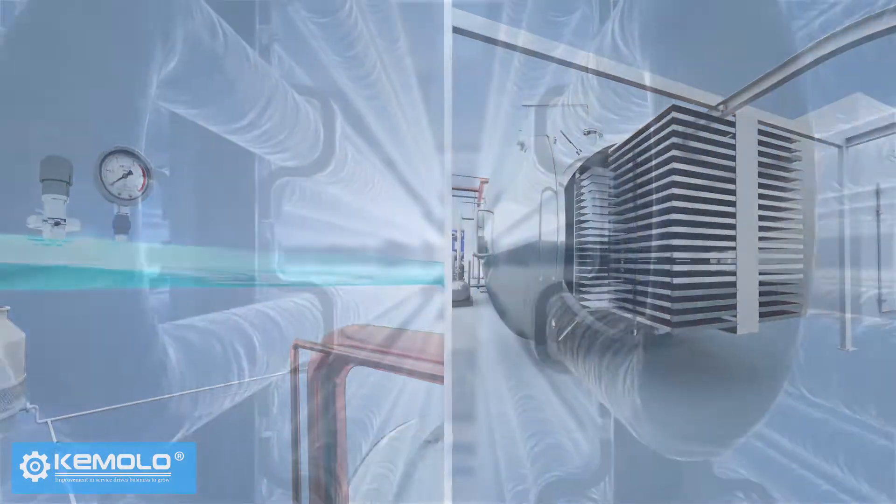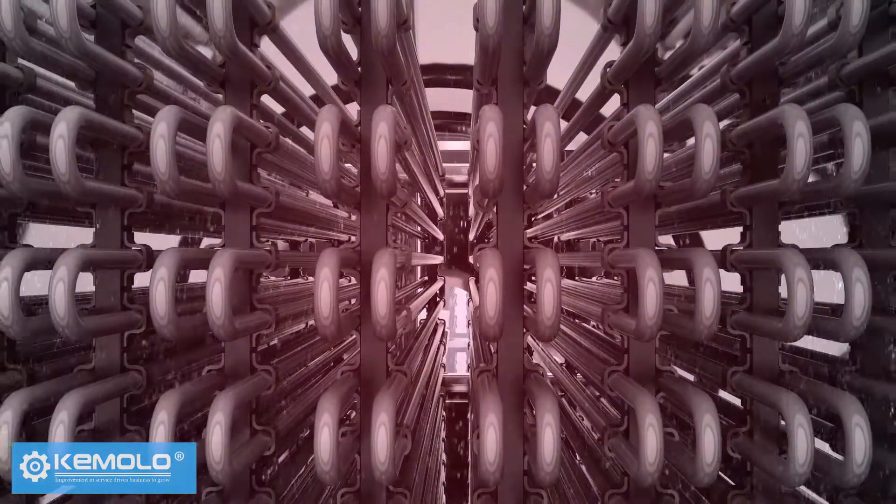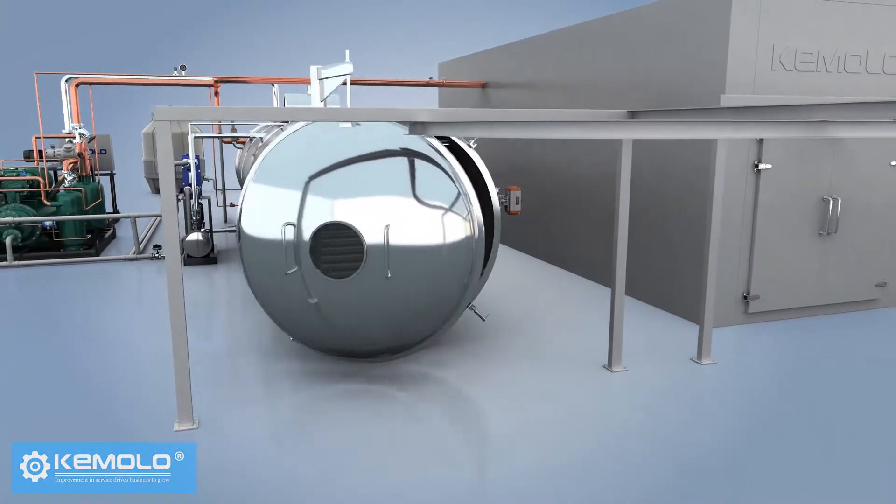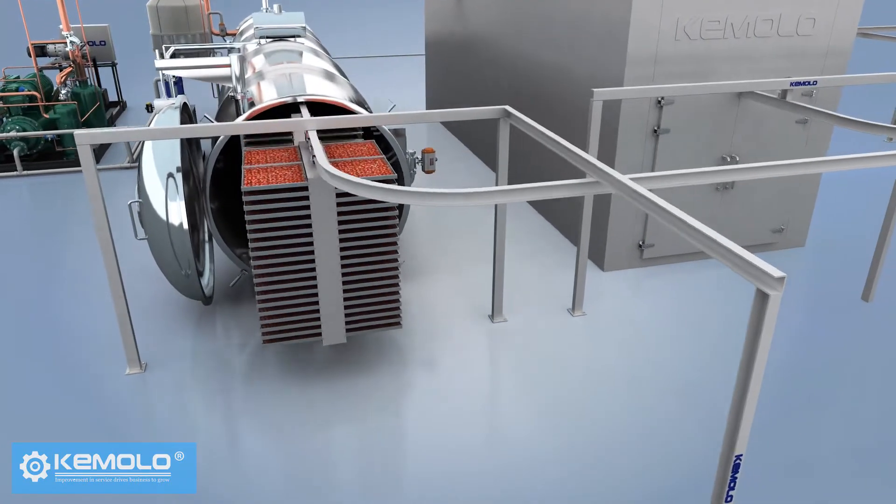After discharging, the frost on the water vapor collector needs to be defrosted for the next batch of production. Therefore, the freeze drying must be produced in batches and the interval between each batch is about 1-2 hours.